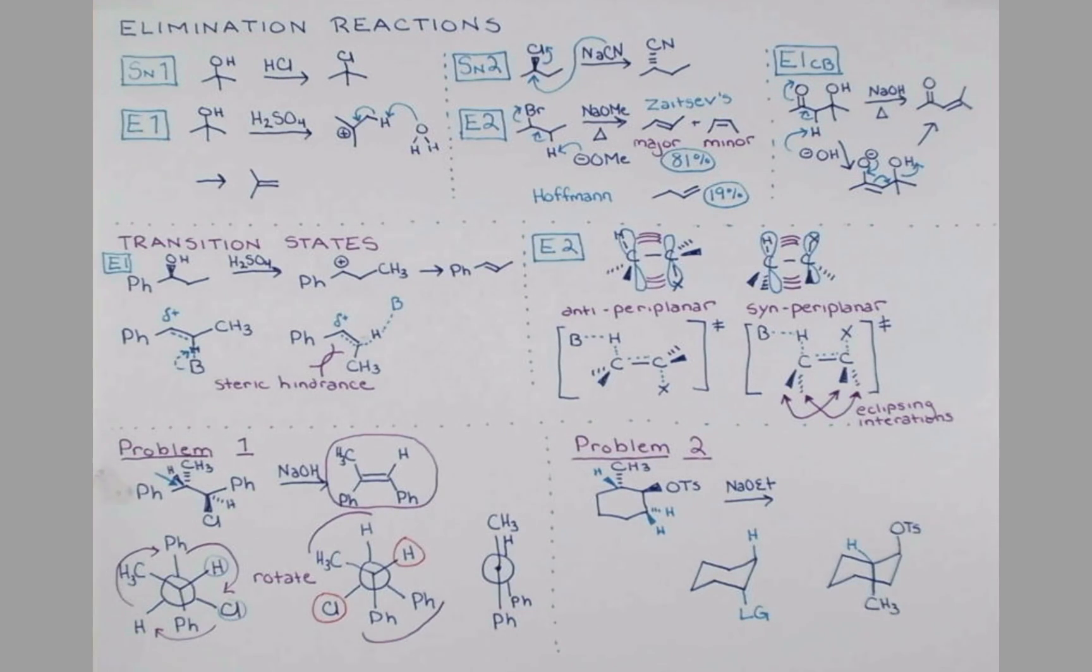So now the sodium methoxide can come in. It'll deprotonate this anti-periplanar hydrogen atom. The electrons can push in, eliminating our tosyl group with good orbital overlap. So we were able to use this chair to see that it's one of these hydrogen atoms that needs to eliminate, and that this one is not in the correct geometry to do so.